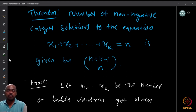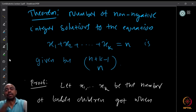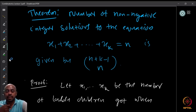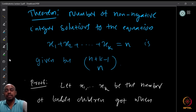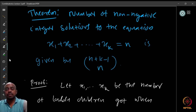You take one laddu from each child, so you collect k extra laddus. Put those k extra laddus on the table as well. Now send the children back to the queue. Whenever a child comes, the distributor cannot give them nothing — because each child already gave one laddu to the distributor and must get at least that one back.